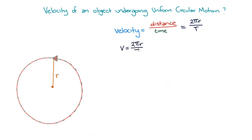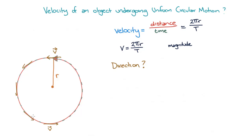Now we know the magnitude of velocity — what is the direction of the velocity vector? We know that an object undergoing uniform circular motion is travelling along the circumference of a circle. To undergo this motion, the velocity vector must be tangential to the circle at every point. At the top of the circle, the object is moving left, so the velocity vector points left. At the bottom, the object is moving right. At the left side of the circle, the object is moving downwards. We can see that at every point on the circle, the velocity is pointing tangentially to the circle.